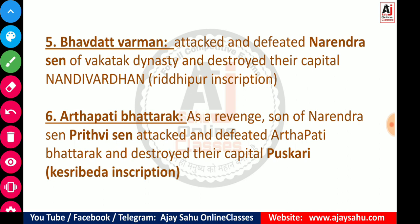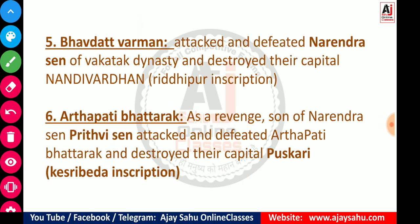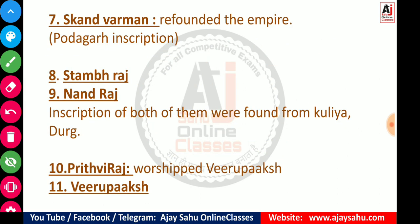After Pushkari was destroyed, Skand Varman refounded the entire empire — rebuilding the capital and the kingdom that had been lost. Hence he is known as the refounder of the empire. This is mentioned in the Poragar inscription. So these three rulers — Bhavadat Varman, Arthipati Bhattarak, and Skand Varman — are important to remember.